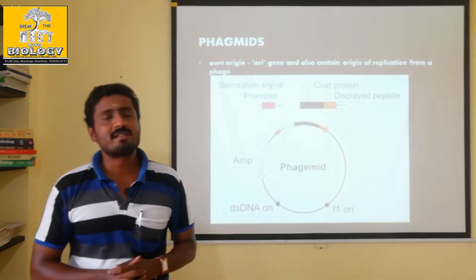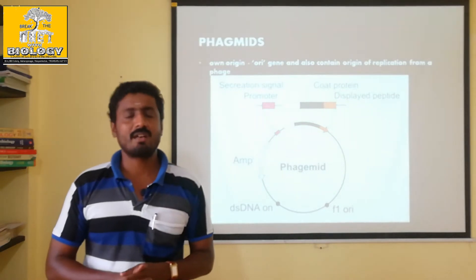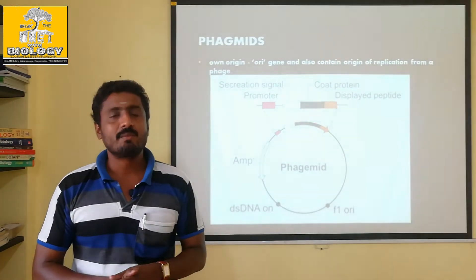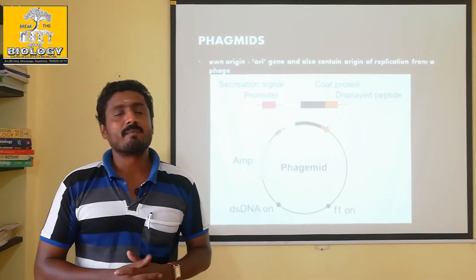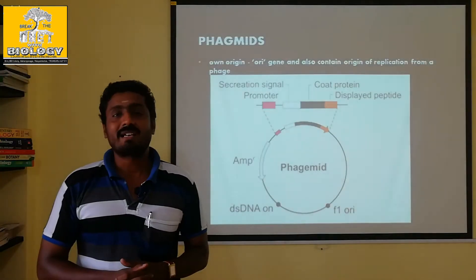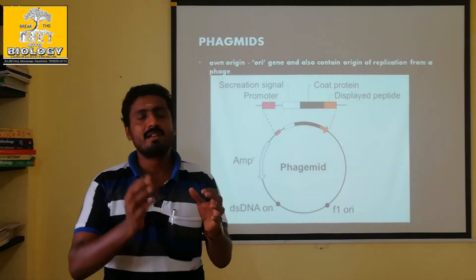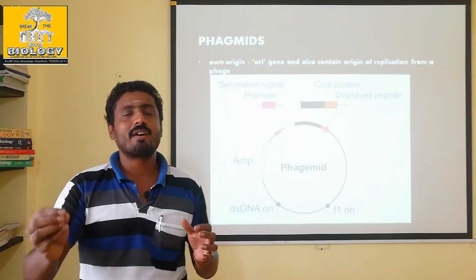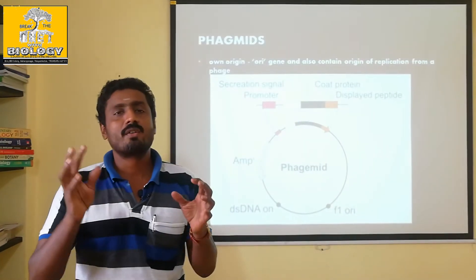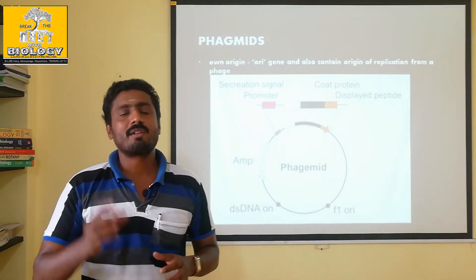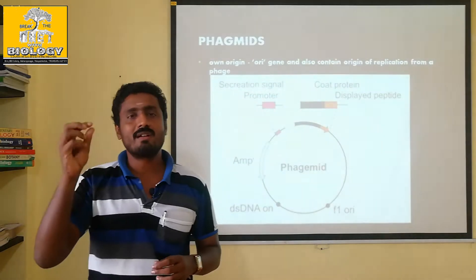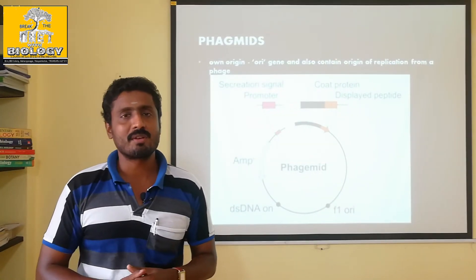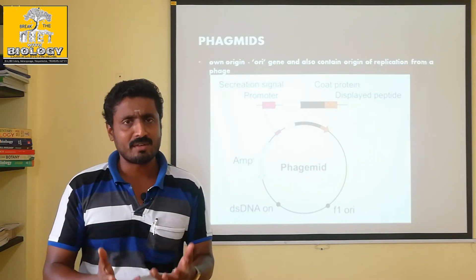Phage — phage is bacterial phage. It is a virus that is attacking the bacteria. Bacteria attack the virus called bacteriophage. Bacteriophage is DNA. The virus is still alive, and the DNA is still alive.